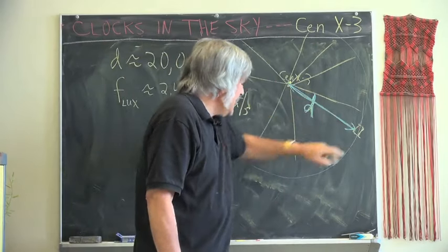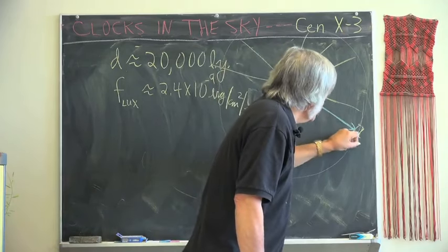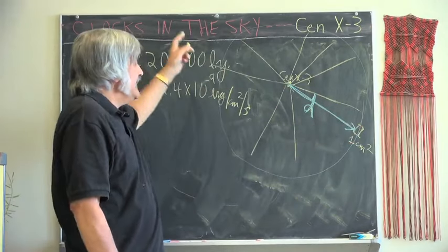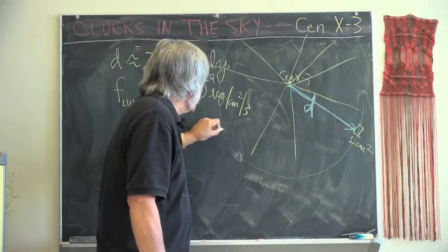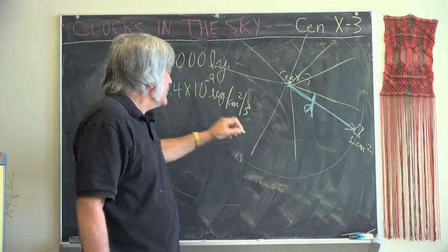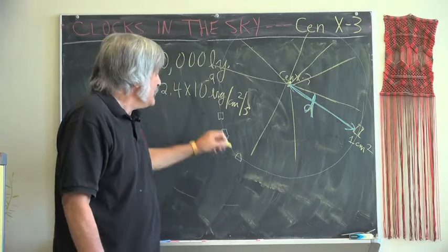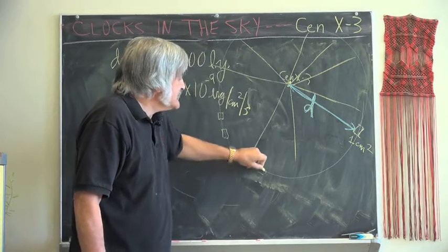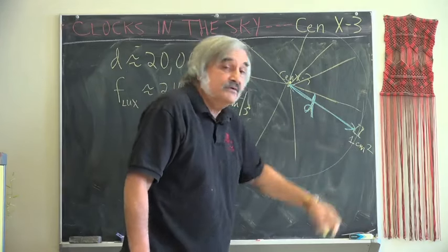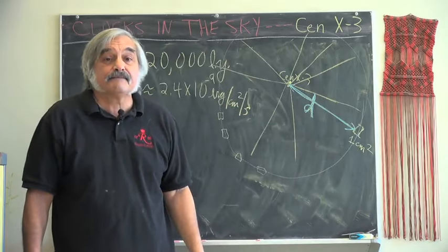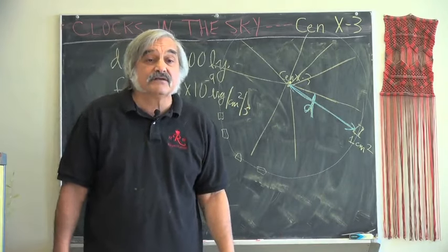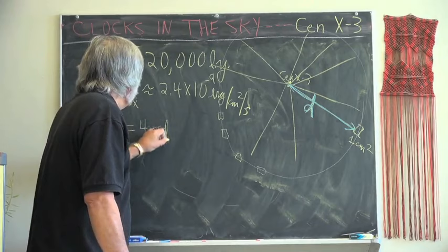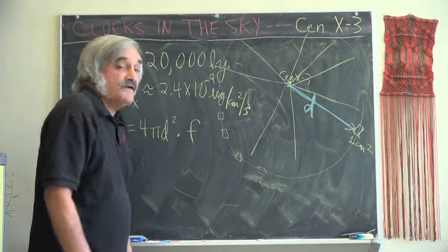So all we have to do is take the flux, which represents 1 square centimeter of area, and multiply it by all of these other square centimeters, of which there are 4πr² of them, where our satellite isn't, but which if we did have something to detect CENX3, we would see the same thing as we do here near the Earth.